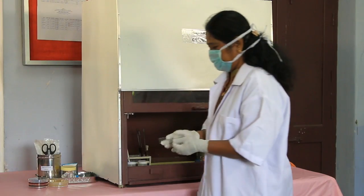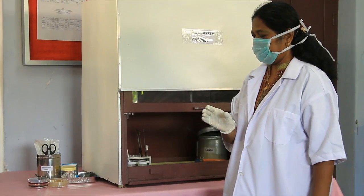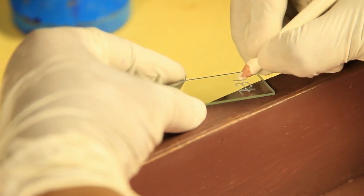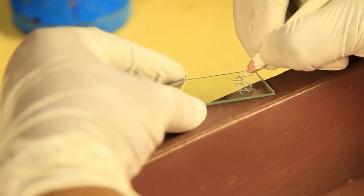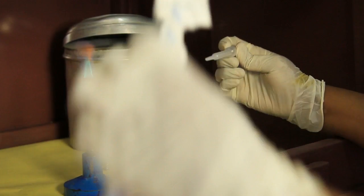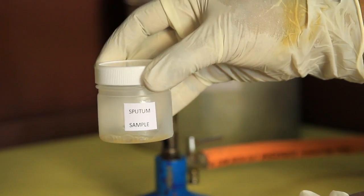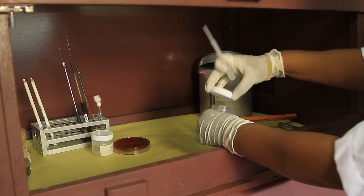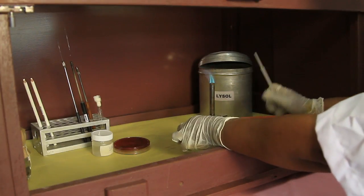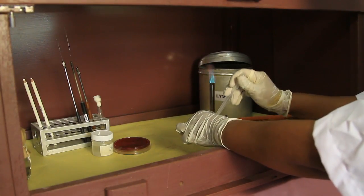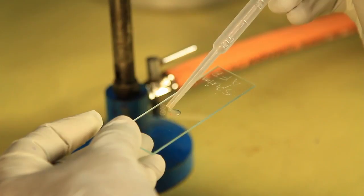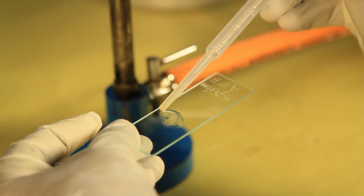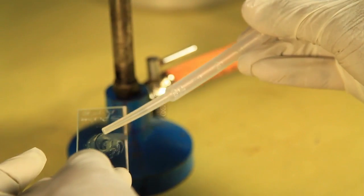For smears directly from the patient sample, take a clean grease-free slide. Label it with patient ID or lab number. With a sterile inoculating loop or dropper, place a small amount of purulent portion of the patient sample, for example sputum, pus, etc., onto the middle of the slide. Spread the sample to obtain a smear of medium thickness. Let it air dry.